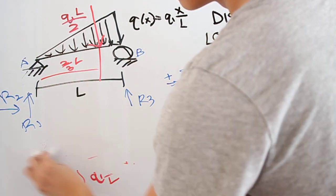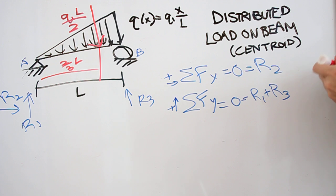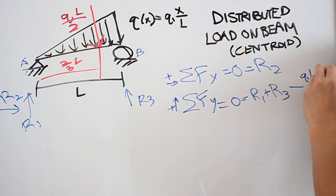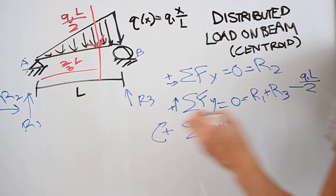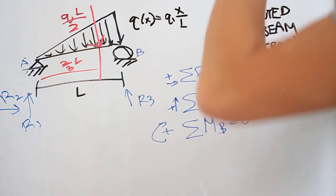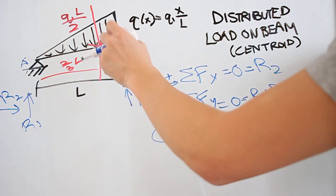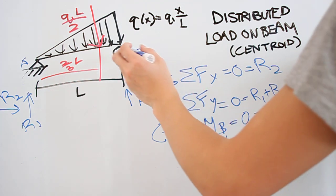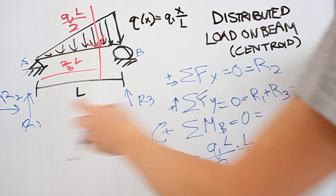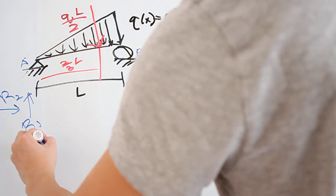Having found what we need from the centroid formula, we can now finish the moment equation. We'll take moments about point B, which eliminates r3. The force q1L over 2 acts at a distance of L over 3 from point B, and it contributes a negative moment, plus r1 times L equals 0. Solving this gives r1 equal to q1L over 6.